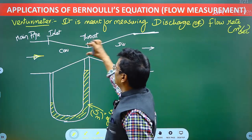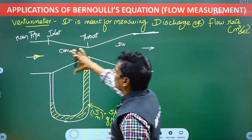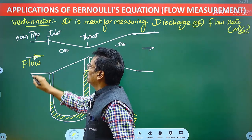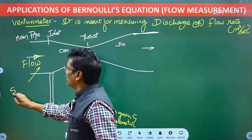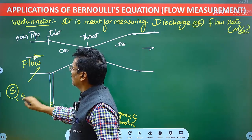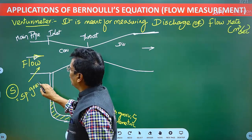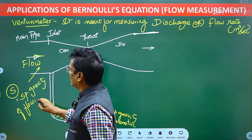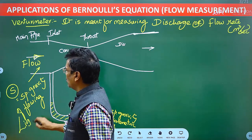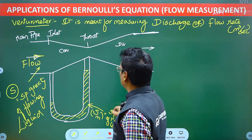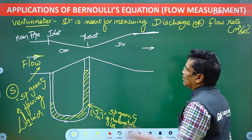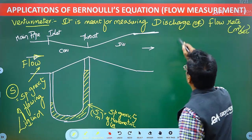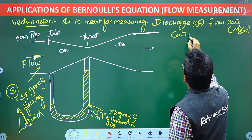The Venturi meter is a converging-diverging pipe connected to the main pipe for measuring the discharge of the fluid. The specific gravity of the flowing liquid and the specific gravity of the manometric liquid are the two key fluid properties. The Venturi meter works on two conservation principles: one is conservation of mass, also called the continuity equation.